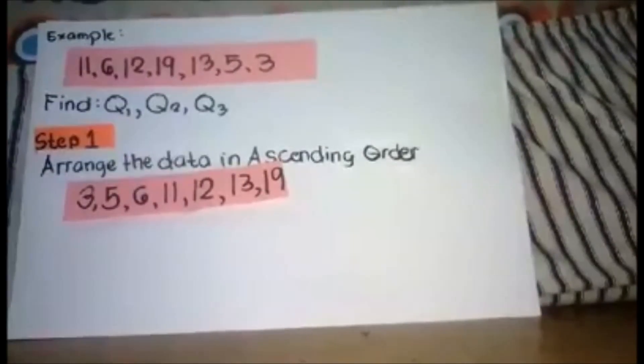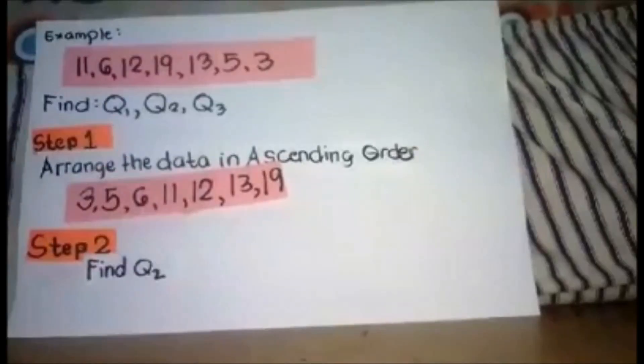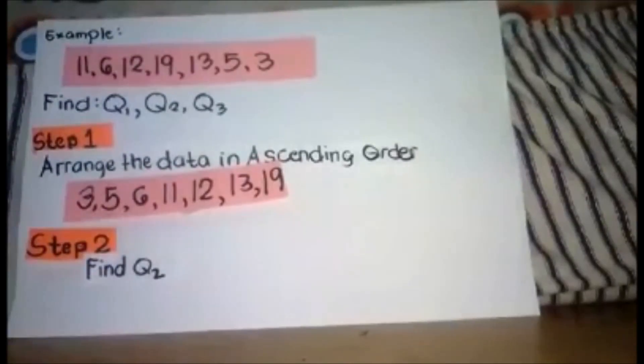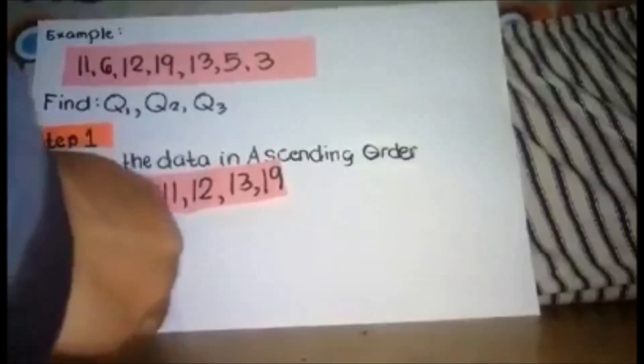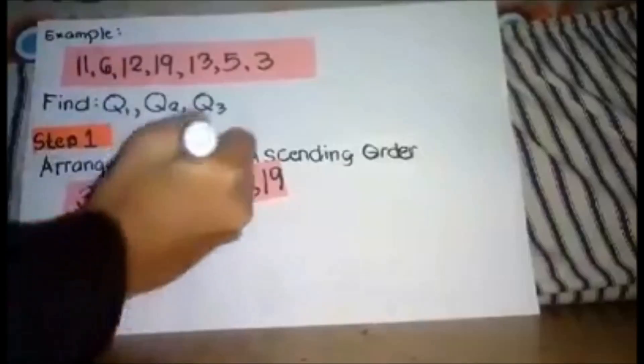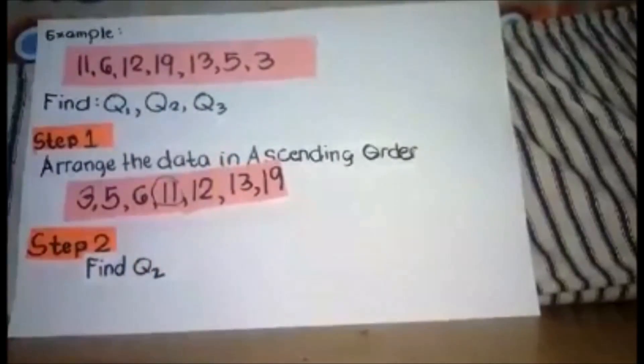Step 2, find the median or quartile 2. After finding the median, when you say median, it is found in the center of the data or in the middle. So counting from each end: 1, 2, 3, 4, and 1, 2, 3, 4. Our median is 11.